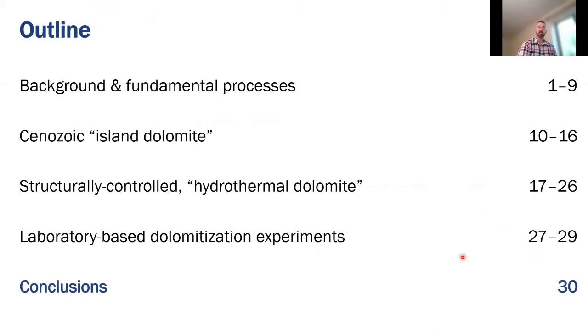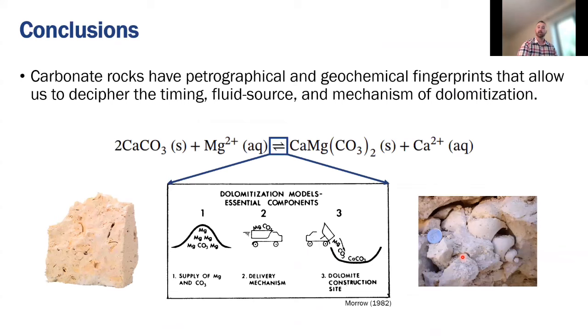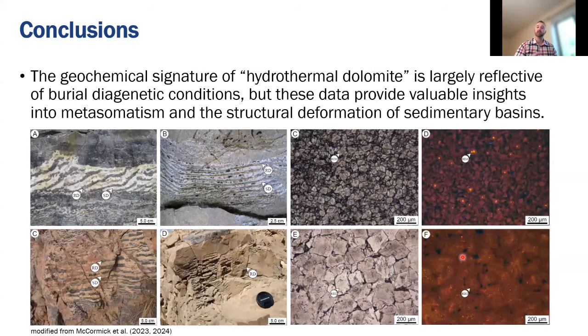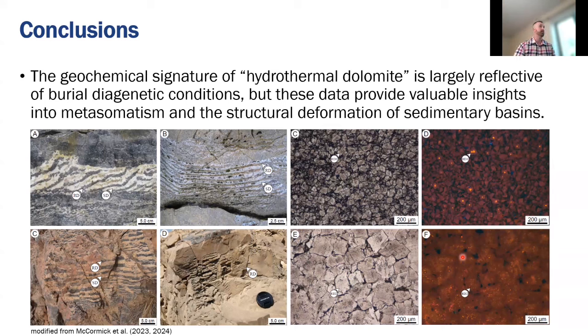All right, so just some conclusions to end this presentation. Carbonate sedimentary rocks have petrographical and geochemical fingerprints that allow us to decipher the timing, fluid source, and mechanism of dolomitization. Low temperature island dolomite, such as those on the Cayman Islands and the Xisha Islands, may retain the geochemical signature of seawater, and these successions could maybe be used to interpret ancient paleo-oceanographic conditions. On the other hand, the geochemical signature of hydrothermal dolomite is largely reflective of burial diagenetic conditions, but these data may provide us with valuable insights into the flux of diagenetic fluids within a sedimentary basin, alongside the metasomatism and structural deformation of carbonate sedimentary rocks.